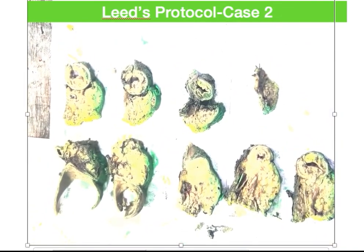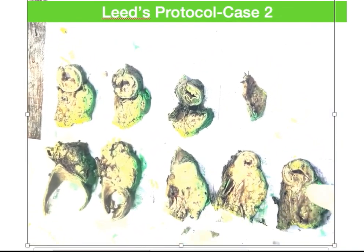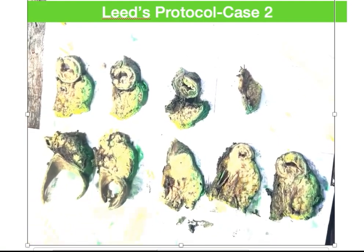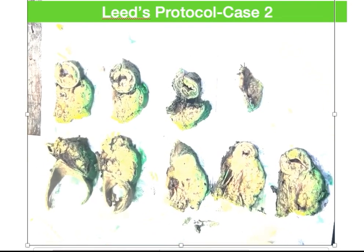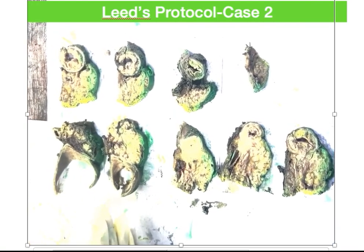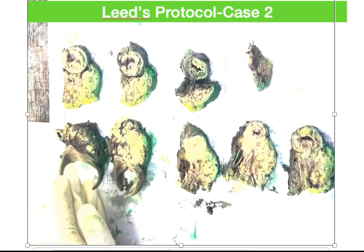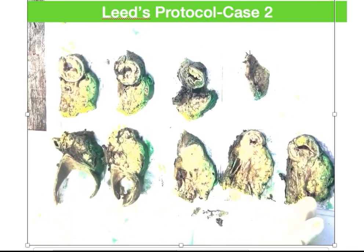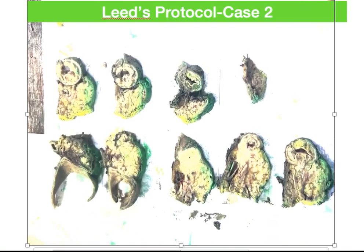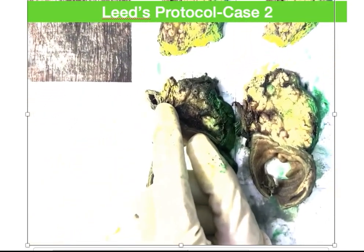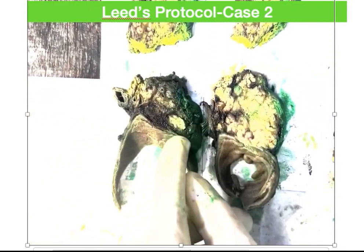Now, once we have done the slicing of the pancreatic region from top to bottom — moving from the superior to the inferior aspect of the pancreas — these are the different sequential slices obtained from the pancreatic ratio. Each slice is oriented according to the inking key already established: the anterior surface is placed in front in a sequential pattern. In the first slice, we can identify the CBD and pancreatic tissue, as well as the peripancreatic lymph nodes. In the first and second slices, no tumor is visible.